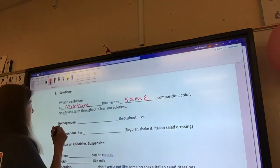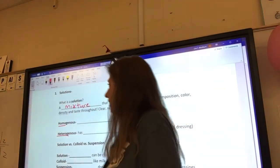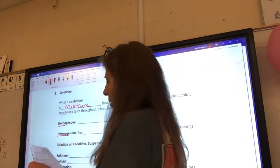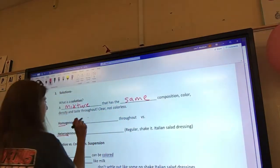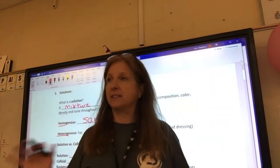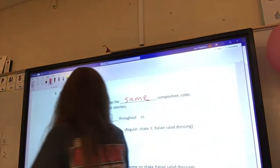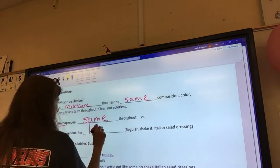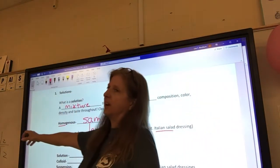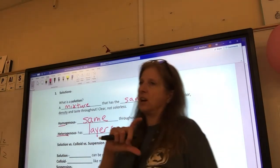So there's two kinds of mixtures. And one is homogenous, and the other one is heterogeneous. On our prior knowledge, what does homo mean? Same and hetero? Different. So homogenous is the same throughout. So normally Kool-Aid is the same throughout. It doesn't have layers. If your Kool-Aid has layers, you might need to throw it out. So heterogeneous has layers, like Italian salad dressing.